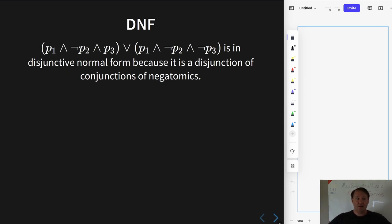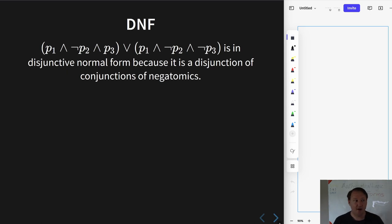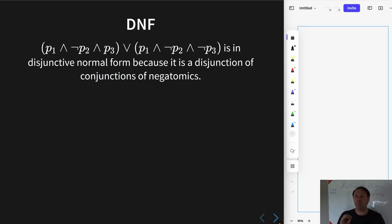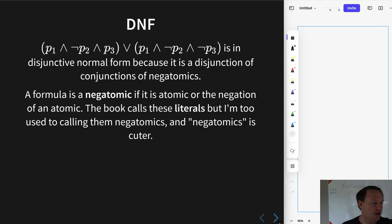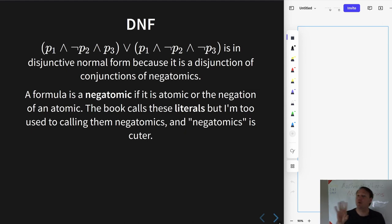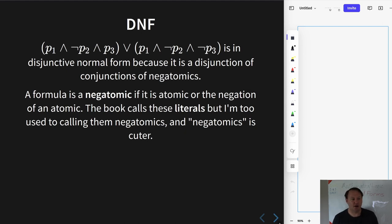Now, what you are disjoining — each formula that you disjoin in this long disjunction — must itself be some conjunction, and only made up of conjunctions. So you're conjoining a bunch of other formulae. Those formulae must be what I will call negatomics. The textbook calls them literals, but negatomics sounds cute. A negatomic is either an atomic formula or a negated atomic formula.